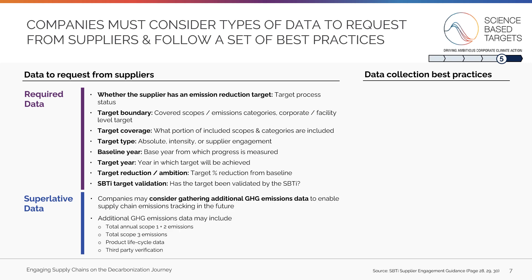Your supplier data collection solution should be able to capture these data points. You may also consider gathering greenhouse gas emissions data to enable supply chain emissions tracking in the future. Although primary greenhouse gas emissions data is not required in the near term, in the long term it will be necessary to track reductions in supply chain emissions. It also indicates where your suppliers are in their process and allows you to review the quality of emissions data being reported.